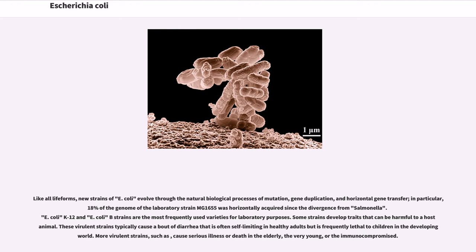Like all life forms, new strains of E. coli evolved through the natural biological processes of mutation, gene duplication, and horizontal gene transfer. In particular, 18% of the genome of the laboratory strain MG1655 was horizontally acquired since the divergence from Salmonella. E. coli K12 and E. coli B strains are the most frequently used varieties for laboratory purposes. Some strains develop traits that can be harmful to a host animal.